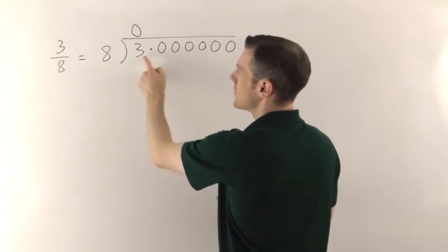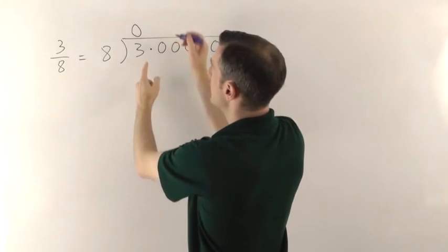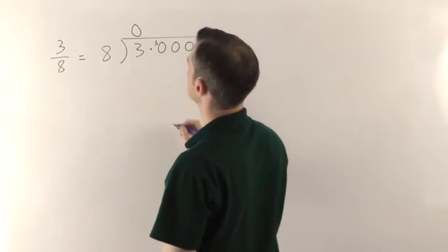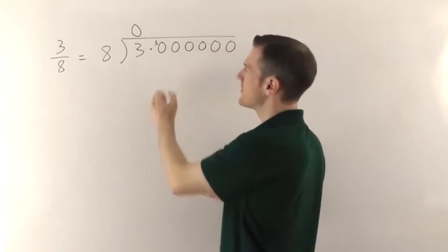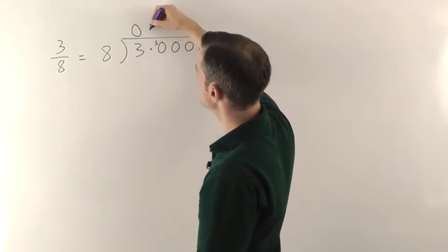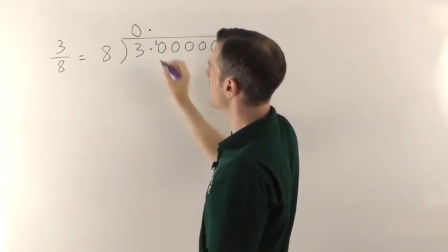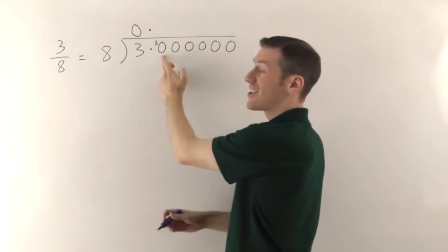So strictly speaking, you say how many 8s go into 3. That goes 0, remainder 3. Or you can just read it as 30 across here. Make sure you put a decimal point above the one below and then you're saying how many 8s into 30.